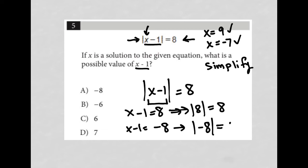So the question says, if x is a solution to the given equation, what is a possible value of x minus 1? Well, x minus 1 could equal 8 or negative 8, which means answer choice A has to be the correct answer.